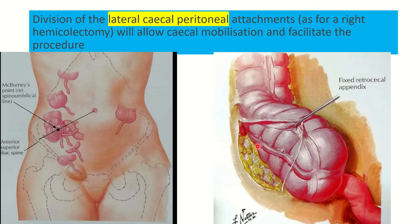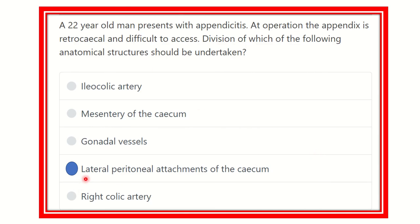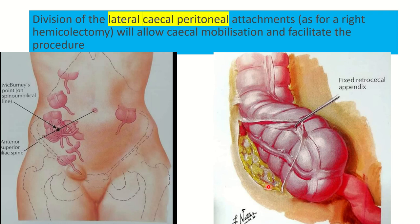If the appendix is free from the cecum, it is very easy to gain access, bring it out, ligate it, and perform appendectomy. For a retrocecal non-fixed appendix it is easy to find and ligate, but for a retrocecal fixed appendix it is very difficult. To gain access, the lateral cecal peritoneal attachment must be cut during the appendectomy procedure.